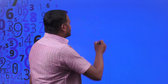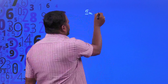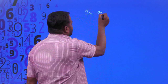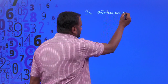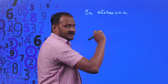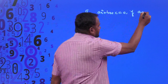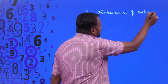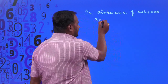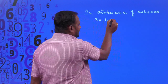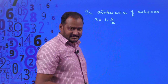In Ax² + Bx + C = 0, if the value of A plus B plus C is equal to 0, then the roots are x = 1 and x = C/A. This is what we discussed in the previous class.